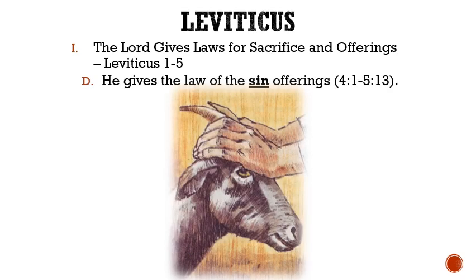Letter D: He gives the law of the sin offering. There were three types of offerings. First, if a priest or the congregation sinned, they were to sacrifice a young bull. Second, if a ruler sinned, then they were to sacrifice a young male goat. Third, if a common person sinned, then they were to sacrifice a young female goat or lamb. They were to bring the sacrifice to the door of the tabernacle, lay their hand upon its head, and kill it. Then the priest would dip his finger in its blood and sprinkle it in front of the veil of the sanctuary, on the altar of incense, and all the rest would go on the brazen altar.